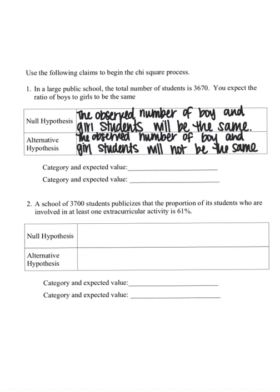So in this particular example, there are two categories that the students could fall into: either female or male. The first category would be to be a boy, and the second would be to be a girl. We would expect that half of the students would be boys and half would be girls. So I would multiply the total number of students, 3,670, by 0.50, or 50%, in order to get my expected value for both boys and girls.